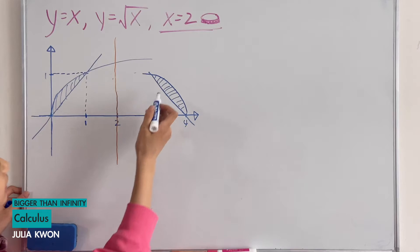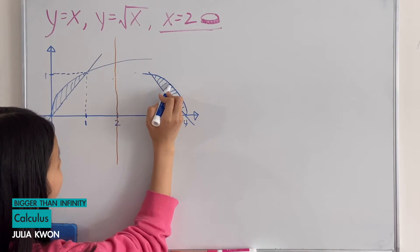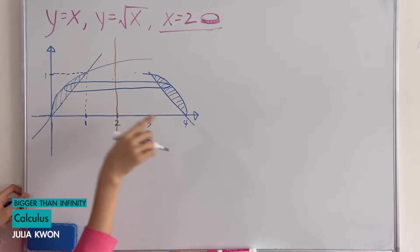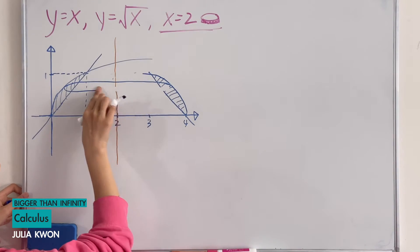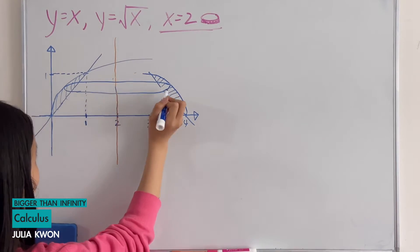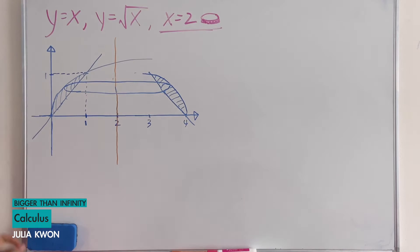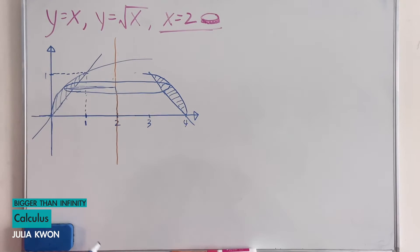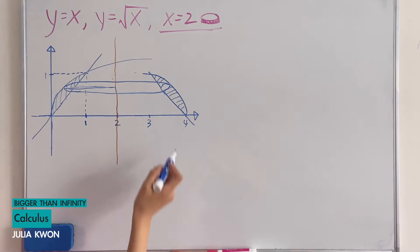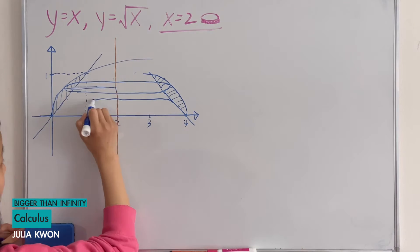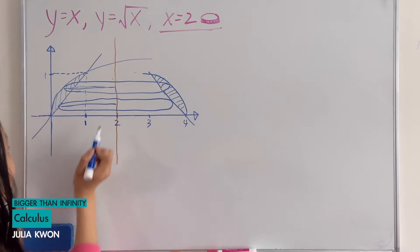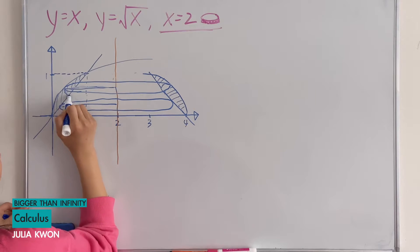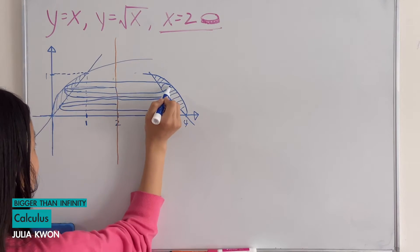The larger disk would be here, with its radius shown here, and the smaller disk would be this one. They both will have a width or depth of dy.